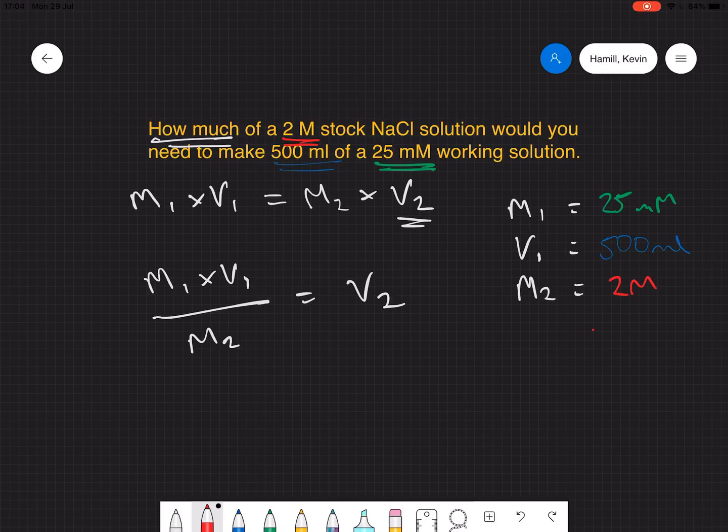The only thing we need to think about now is, are these in the same units? And we can see that that's in millimolar and the bottom is in molar. So we'll just convert the bottom one into millimolar. So 2 molar is 2,000 millimolar.